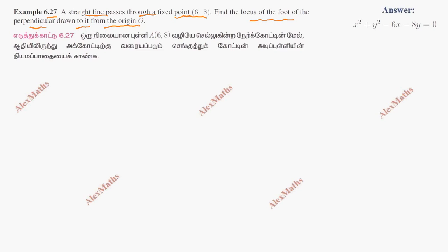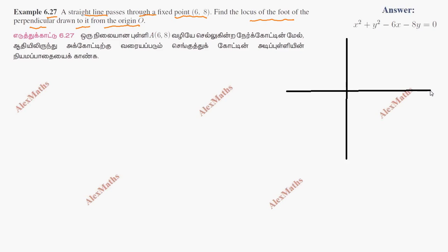Now there is a straight line. We have the x-axis and y-axis. There is a fixed point (6, 8), marked on the diagram. A line passes through it — that line is random; many lines are possible, but we consider a particular line. The line is AB, and the foot of the perpendicular from the origin is point C, with the origin at D.